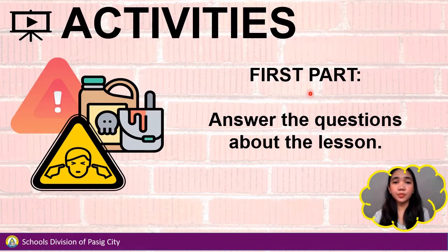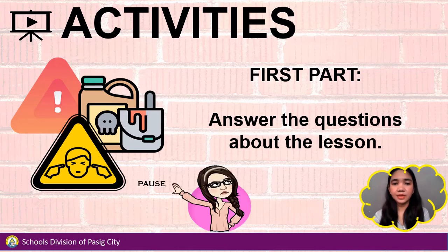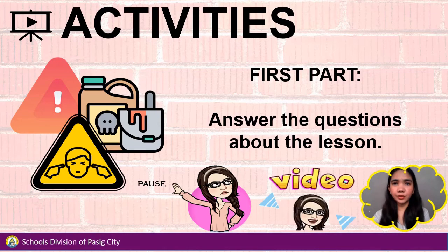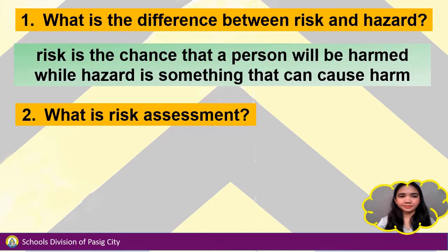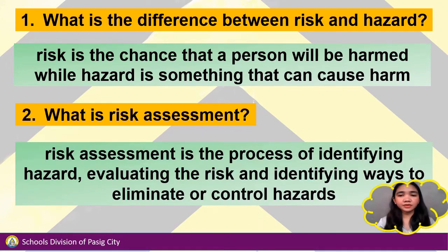Now let's have the first part of your activity — answer the questions about the lesson. Pause the video while doing the activity and play the video when you're done. Number 1: What is the difference between risk and hazard? Risk is the chance that a person will be harmed, while hazard is something that can cause harm. Number 2: What is risk assessment? Risk assessment is the process of identifying hazards, evaluating the risk, and identifying ways to eliminate or control hazards.